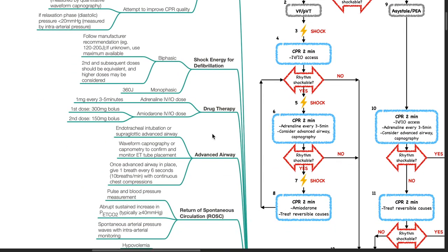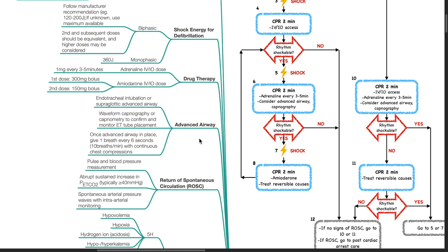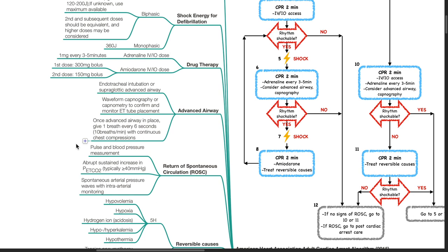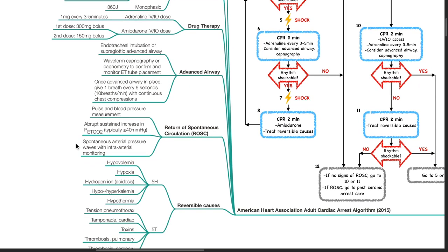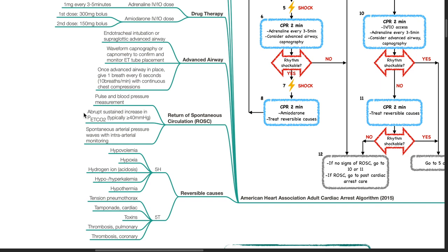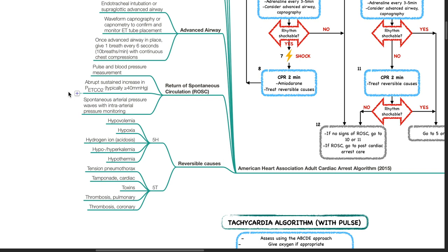Adrenaline dose IV/IO: 1 mg every 3 to 5 minutes. Amiodarone dose IV/IO: first dose 300 mg bolus, second dose 150 mg bolus. Advanced airway includes endotracheal intubation or supraglottic advanced airway; use waveform capnography to confirm and monitor ET tube placement. Once advanced airway is in place, give 1 breath every 6 seconds with continuous chest compressions. ROSC is based on pulse and blood pressure measurement, abrupt sustained increase in ETCO2 typically more than 40 mmHg, and spontaneous arterial pressure waves with intra-arterial monitoring.